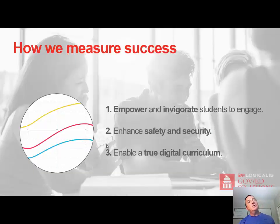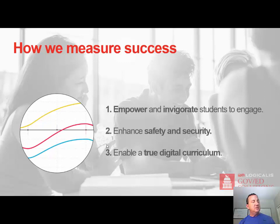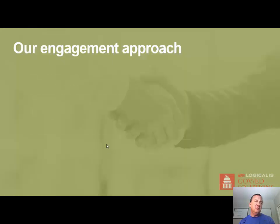How do we measure success with higher ed? Three ways: number one, student engagement — any technology we implement whose outcome is better student engagement is a success. Number two, safety and security — not just the safety of students and faculty, but also data security, identity management, and the ability to manage and protect data. Number three, the digital education experience — anything we do to digitize the experience that increases efficiency, productivity, or creates new ways to teach students is a home run.